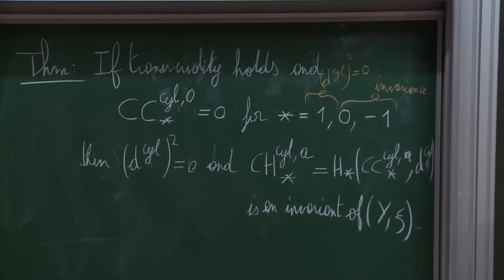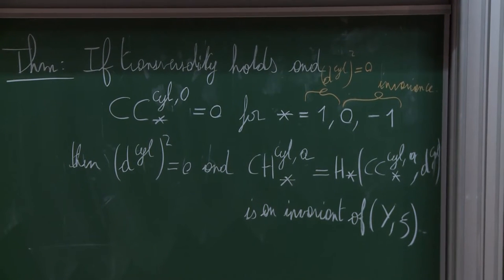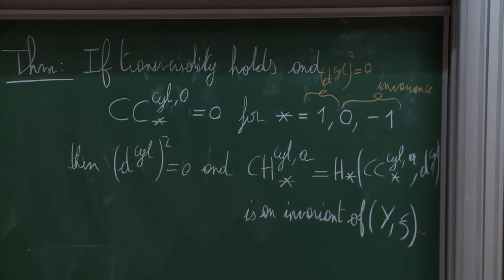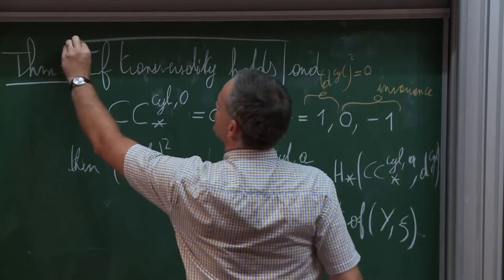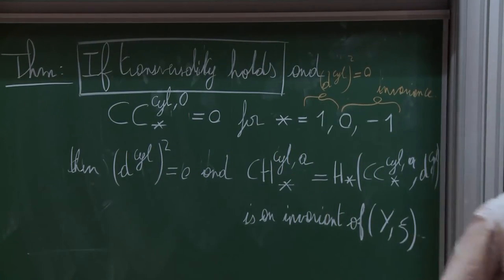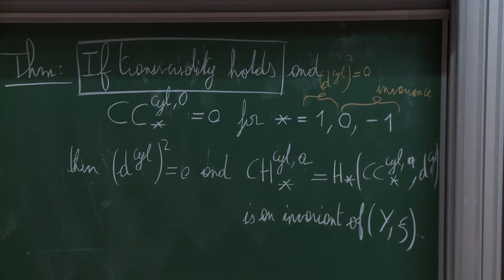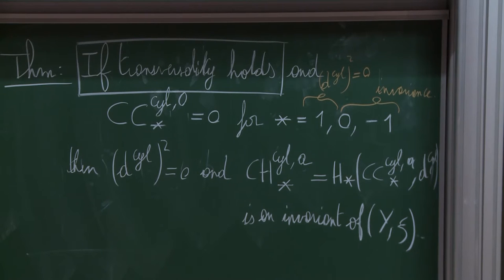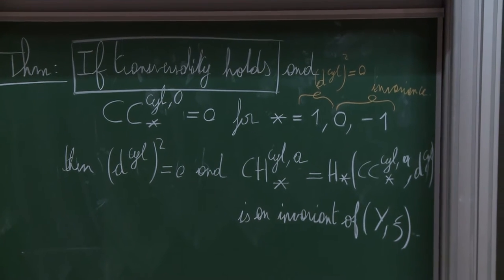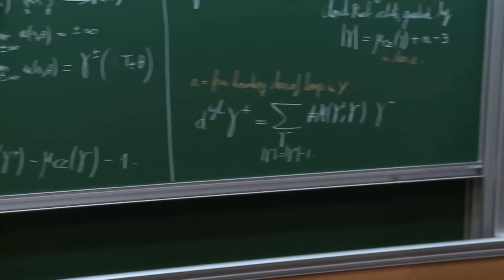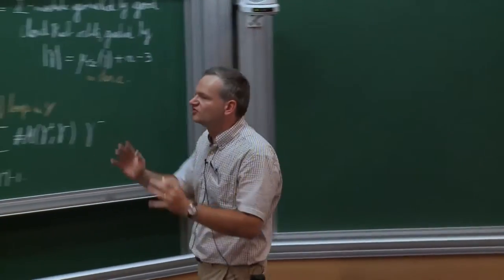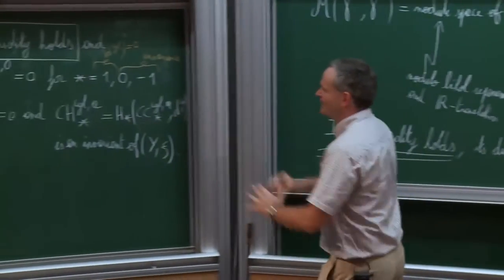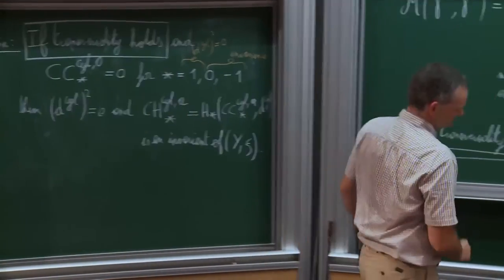This condition that the complex is trivial in grading one corresponds precisely to the assumption needed to guarantee that d_cyl² is indeed equal to zero, so you can define this homology. These two conditions are necessary to show that this homology is an invariant. A priori, it's a very nice tool to study contact manifolds. But the big 'if' is this transversality assumption, because it is very, very rarely satisfied.